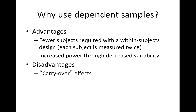Why do we use dependent samples? Well, there are some really, really big advantages. Number one is that if you do a within-subjects design, you need fewer subjects, fewer participants, fewer people to participate in your experiment. If you measure them both before and after a condition, then you only need half of them. You don't need two independent groups. You can get one group that's dependent but have two measures.